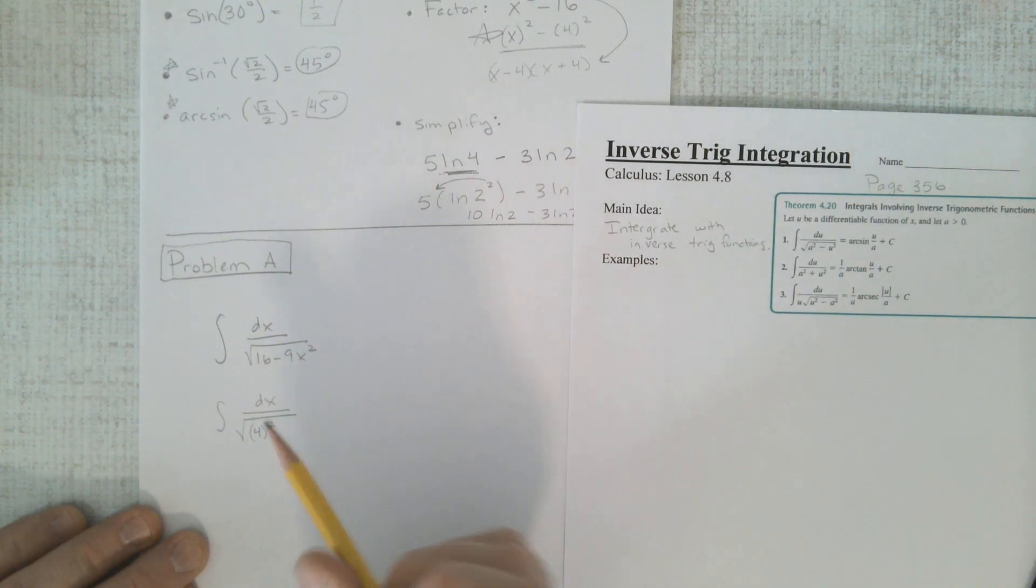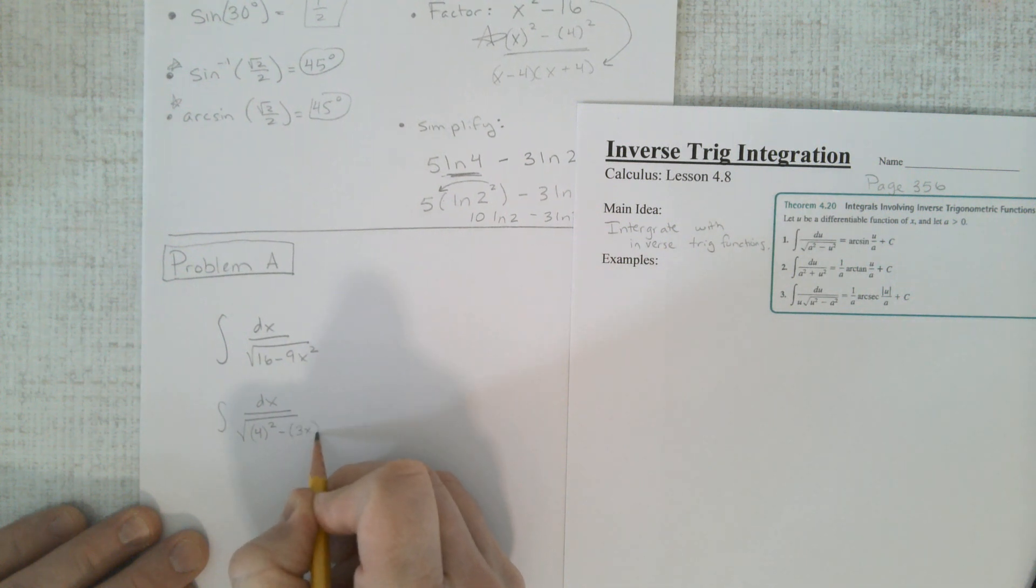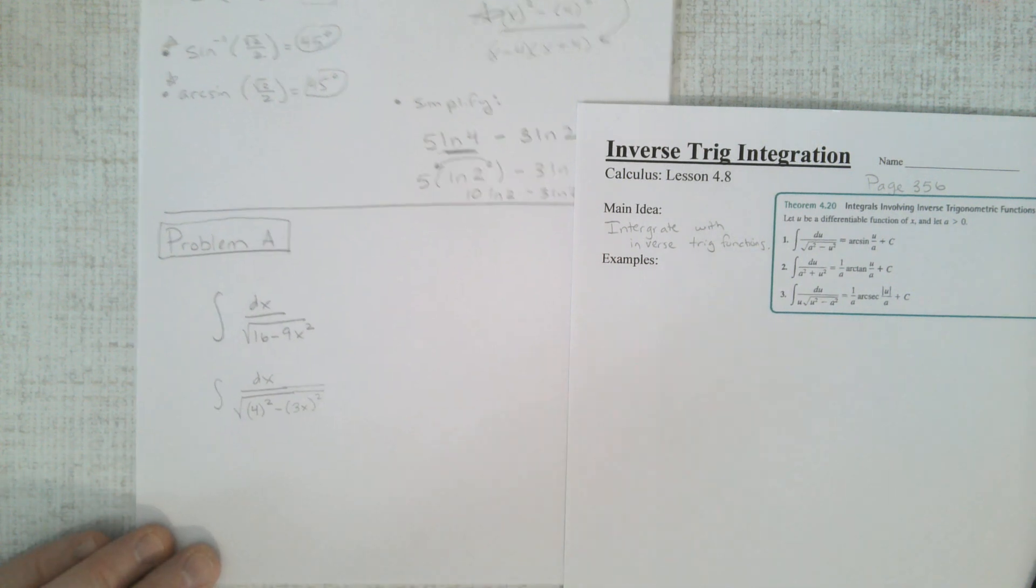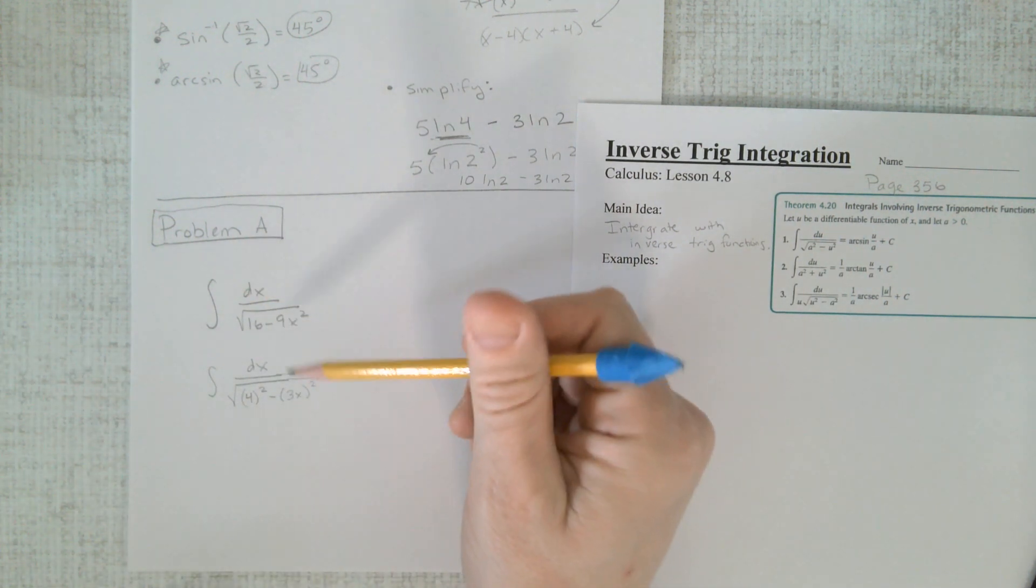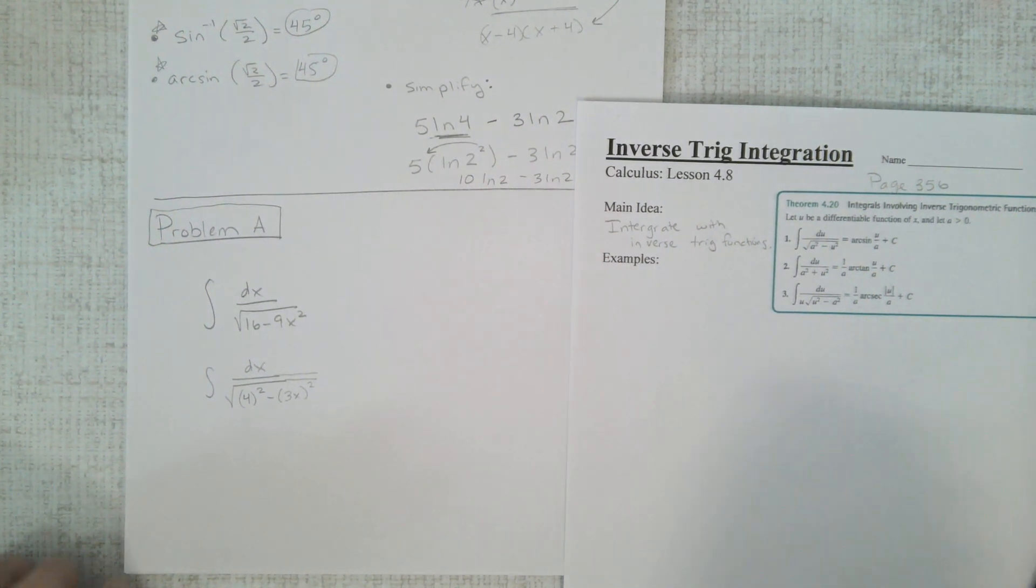The process is to use this logic up here and to say, look, this is really dx over the square root, not 16, but 4 squared, kind of like we rewrote that, minus, not this thing, but 3x squared, and that's your first step. Take the square root, break it down into 4 squared and 9 squared.